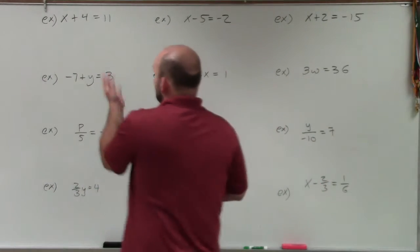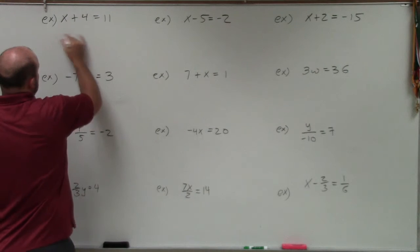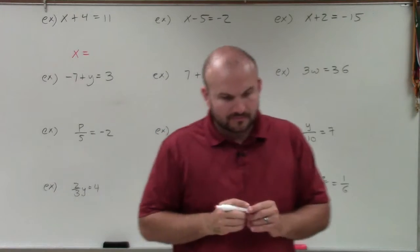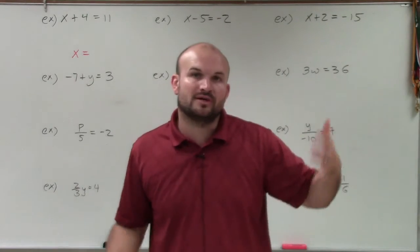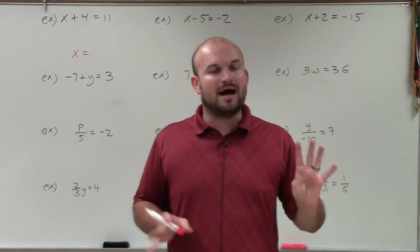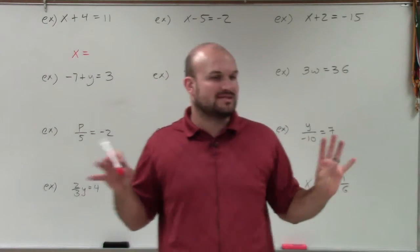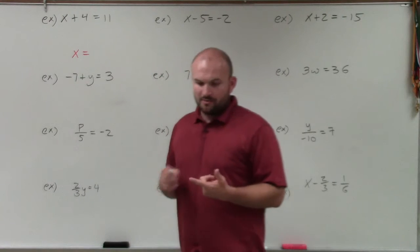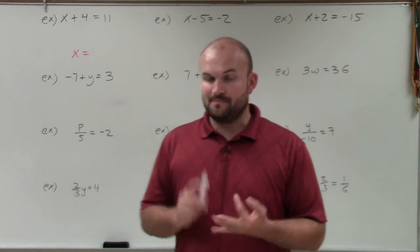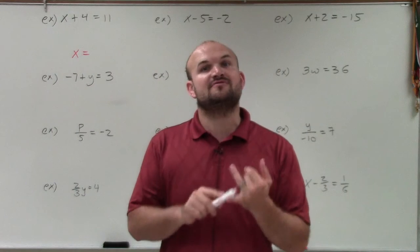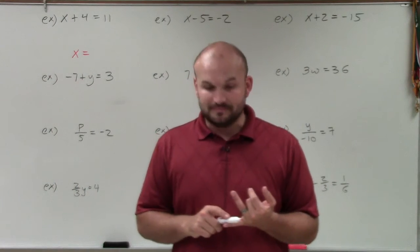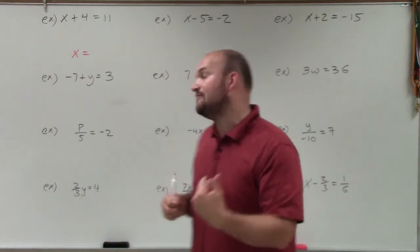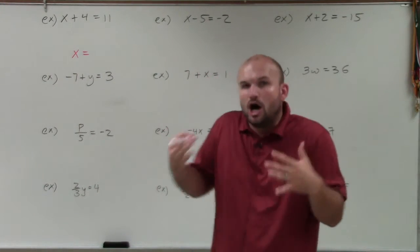We only have completed the problem when, for example, answer number one is completed when x equals a value. So in all one-step equations, it's very important to understand the four operations that can happen to your variable. What can be happening to our variable is: we can add a number to it, subtract a number from it, multiply a number to it, or divide a number by it.